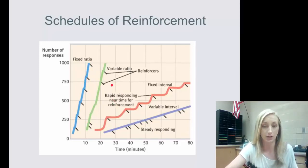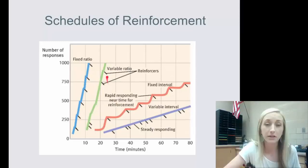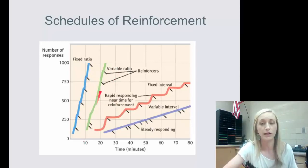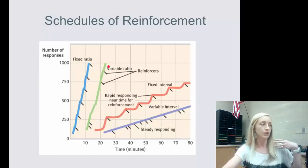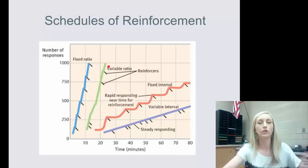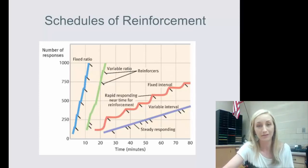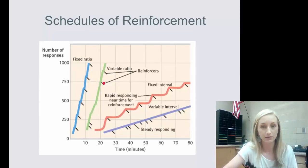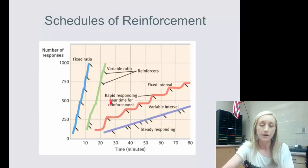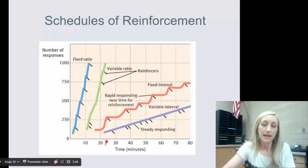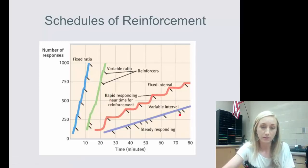Variable ratio is also fast when you first learn — you'll be conditioned to that response rather quickly, with reinforcers shown as the little black tick marks. Fixed interval and variable interval behave differently on the chart.